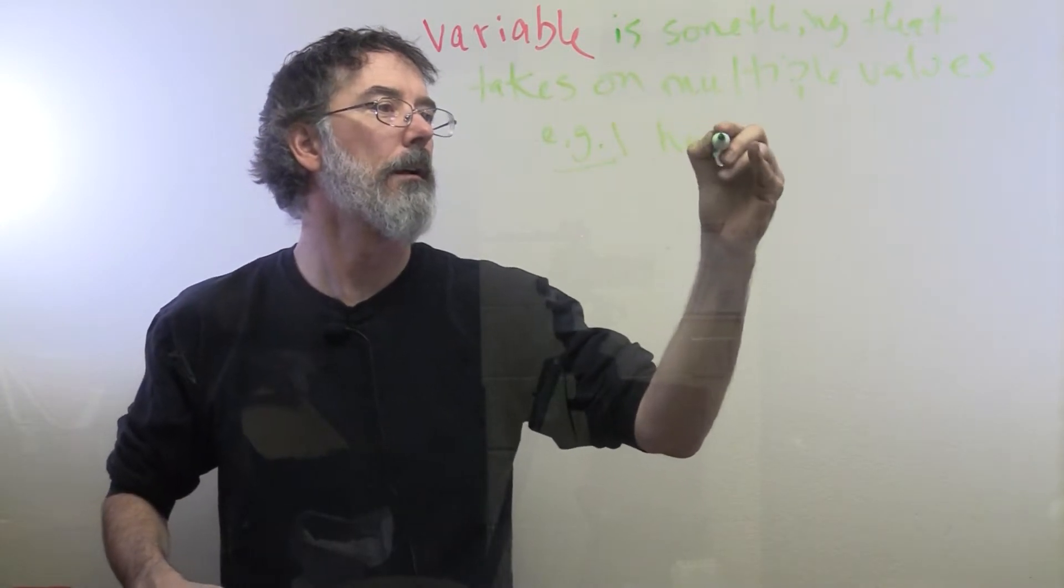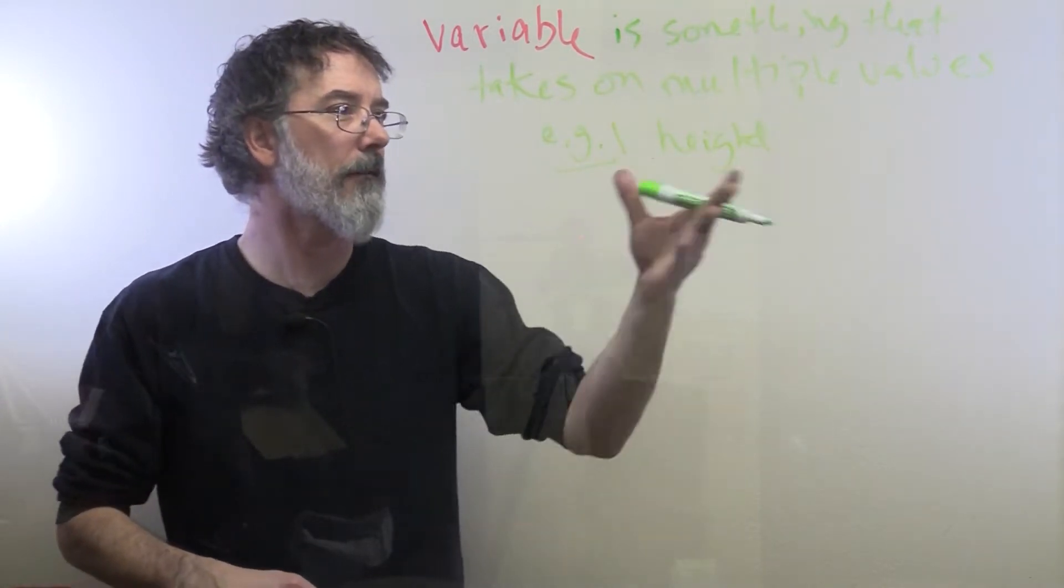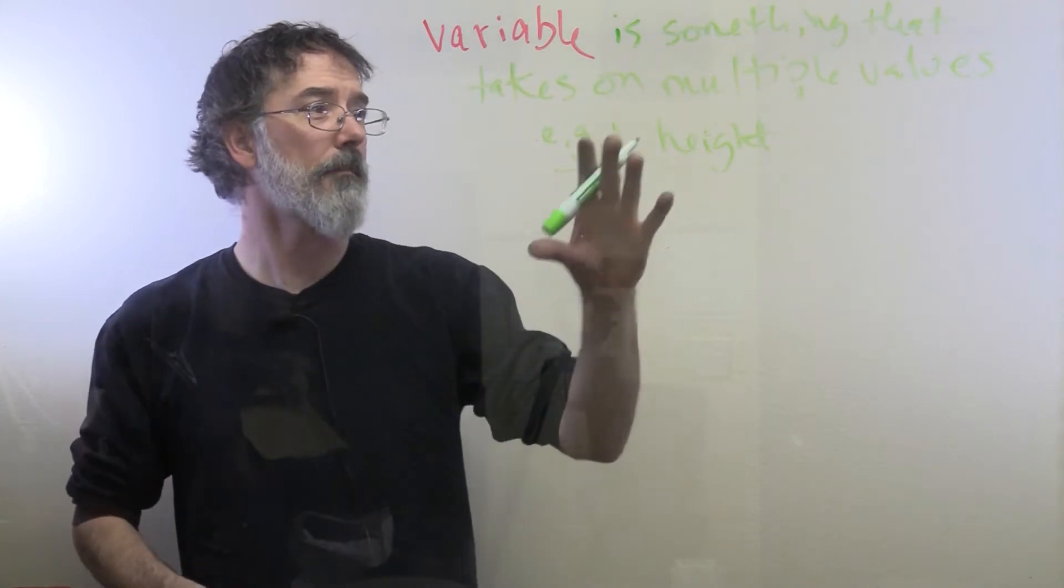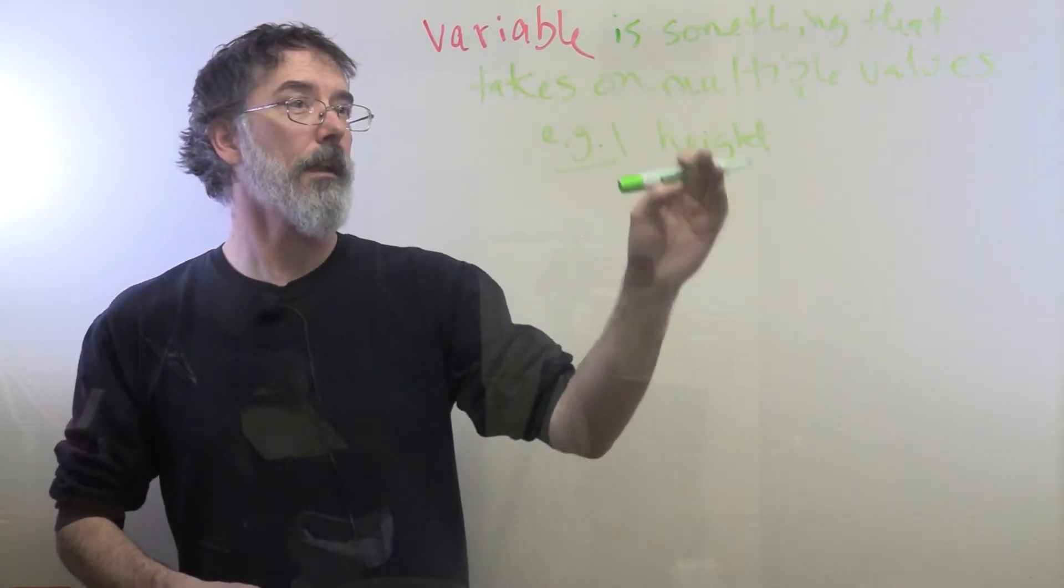For example, height. You could be 5'7", 5'8". Different people have different heights, so height is a variable.